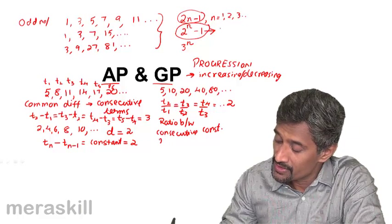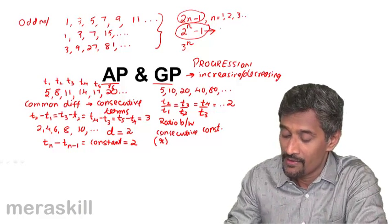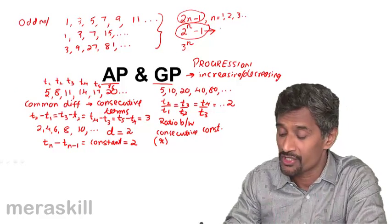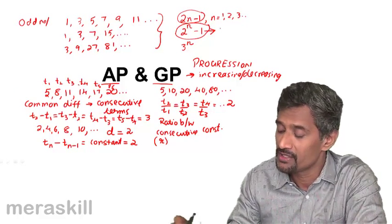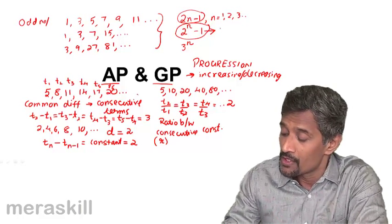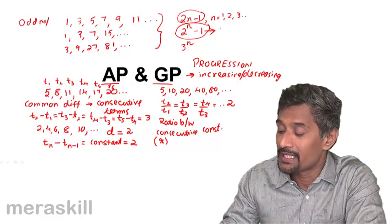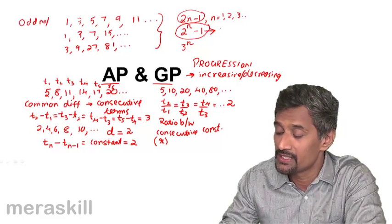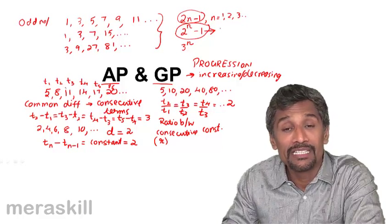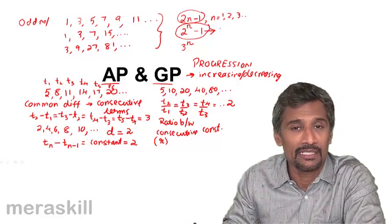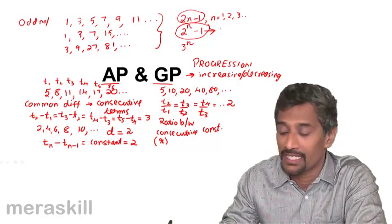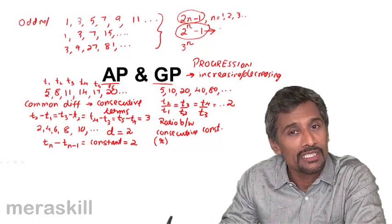So this common ratio is given by the name r, and the first term, whether it's geometric progression or an arithmetic progression, the first term is given by t1, which is also called as a. So the basic difference between an arithmetic progression and geometric progression is that in arithmetic progression, there is a common difference that exists between consecutive terms, and in geometric progression, there is a common ratio that exists between consecutive terms.